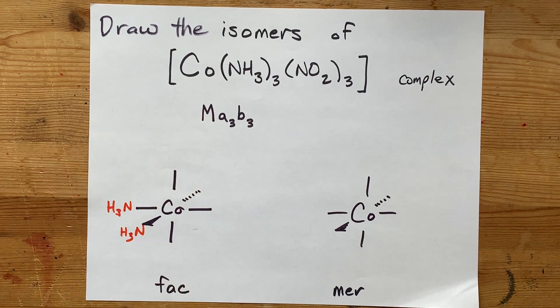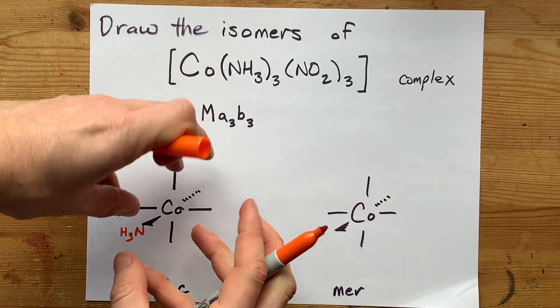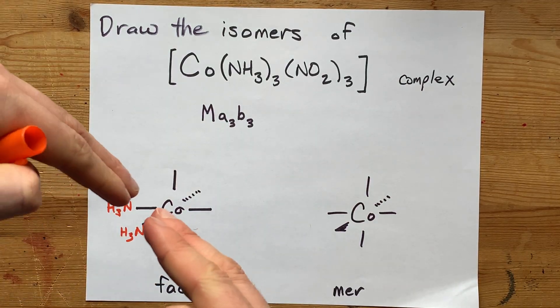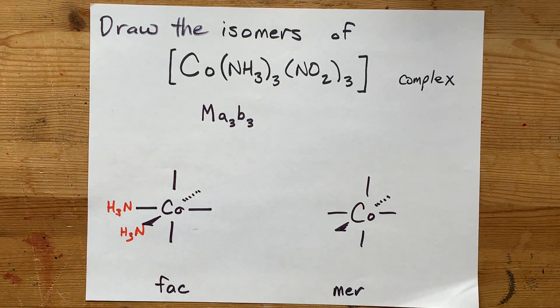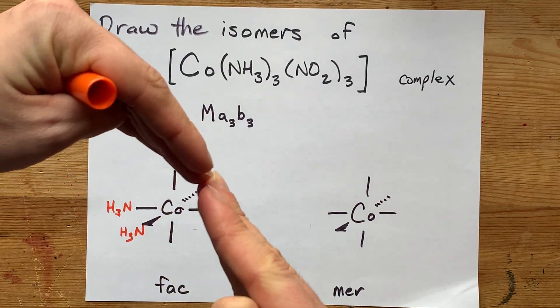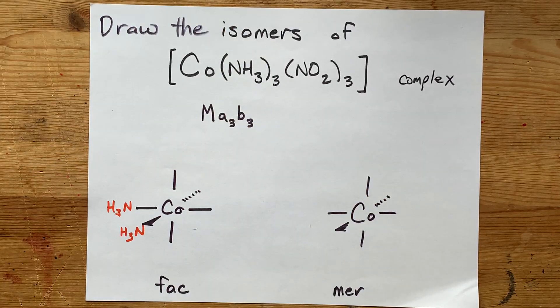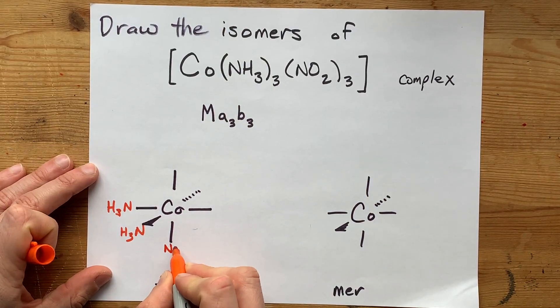I want you to do the NH₃s all in the same corner of the drawing. What this means is that if you rotated this particle around, you could arrange it in one way so that all three NH₃s are on one side, and all three of the other things, in this case nitrite ions, are on the other side. Just put them all together.